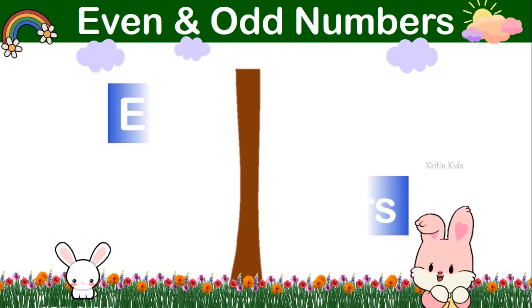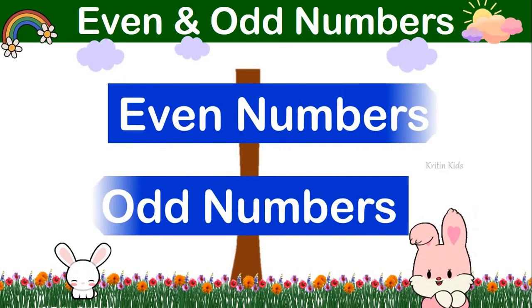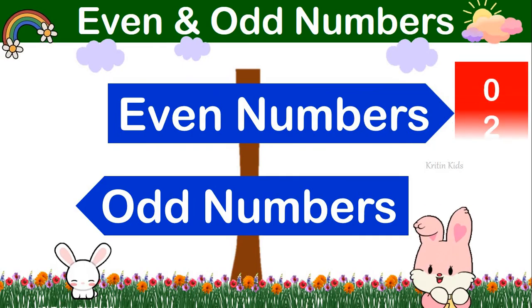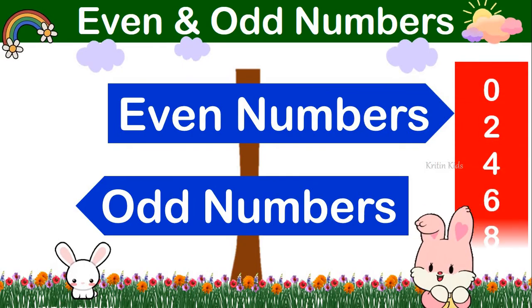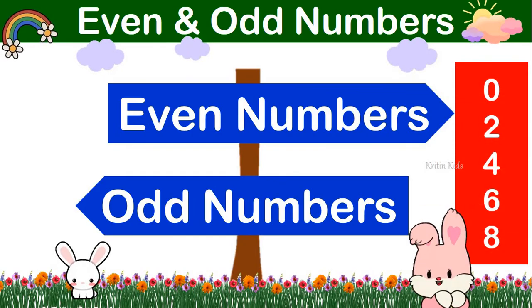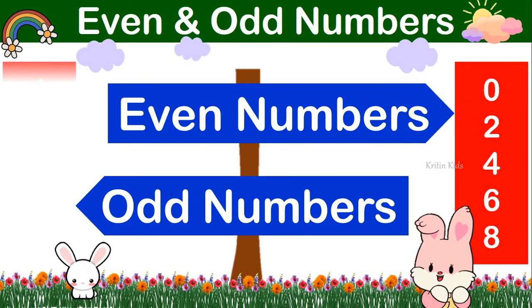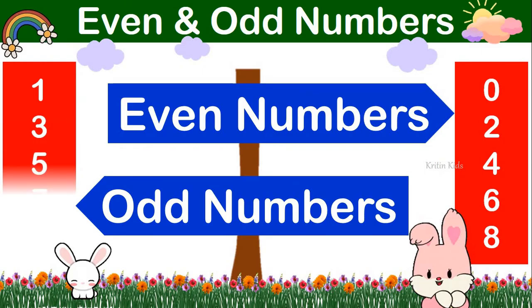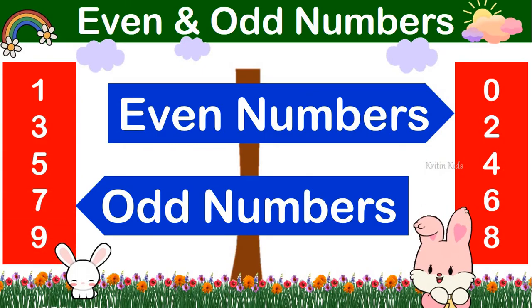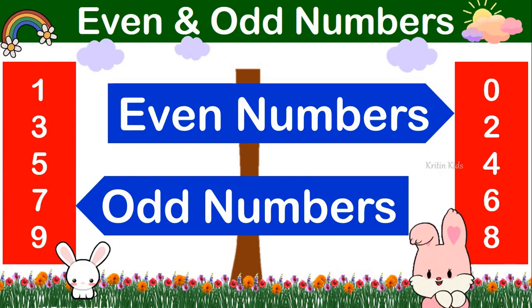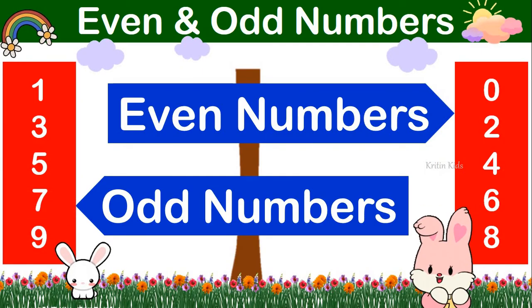Hence we can say numbers 0, 2, 4, 6, and 8 are even numbers, and numbers 1, 3, 5, 7, and 9 are the odd numbers.